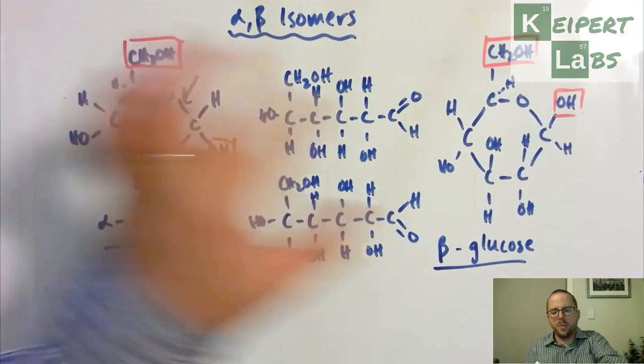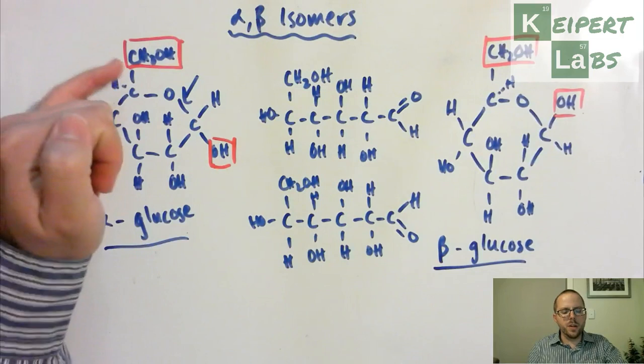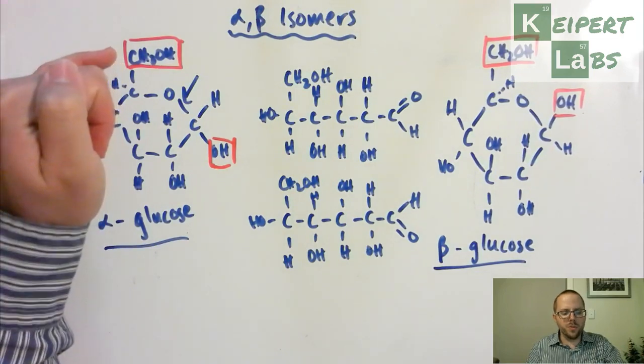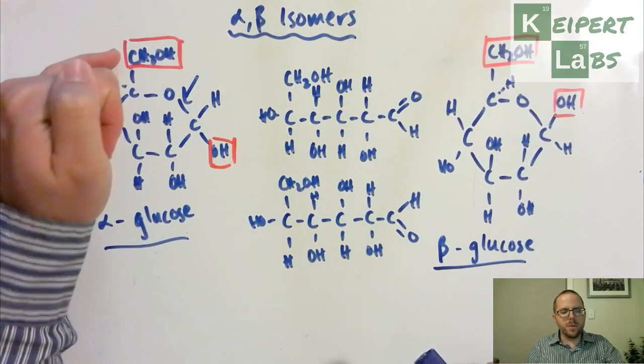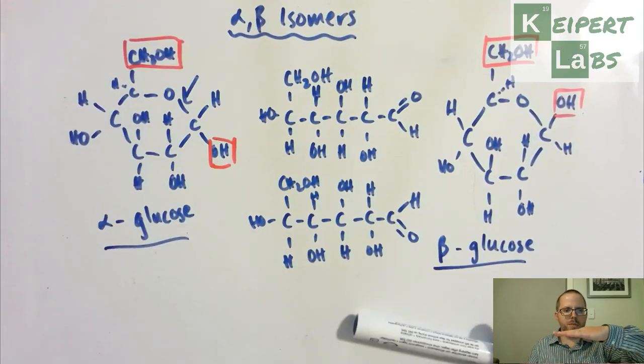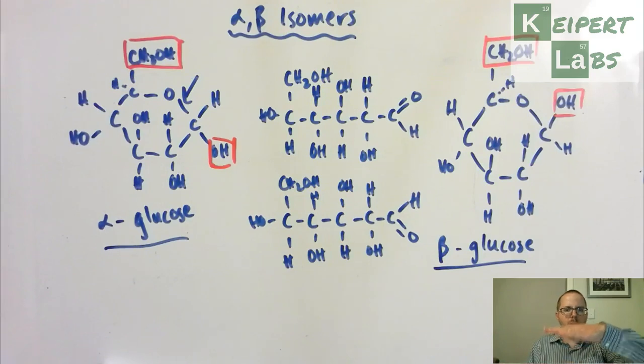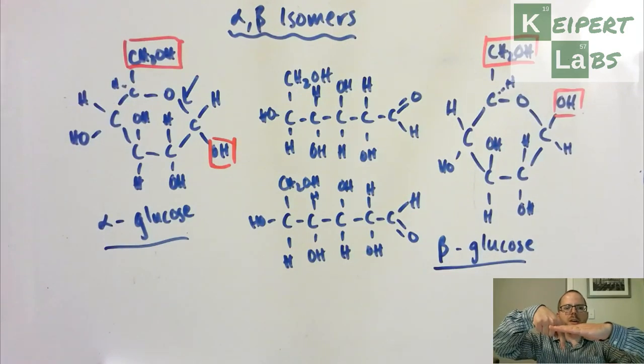based on how these two groups are relative to one another. Because when we make these models, as you will have done by this point or you will do soon, is that this group kind of sticks up. Like if we're kind of thinking about this is the plane of the ring, that then this group actually kind of sticks up out of the ring. It looks like I'm trying to make puppets or something inappropriate. But so it actually kind of sticks up like that.